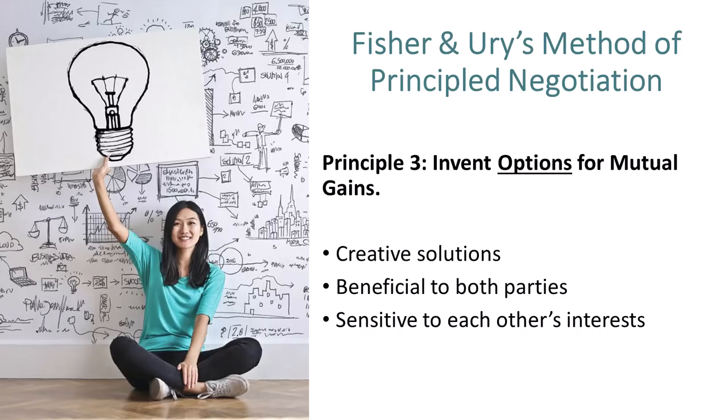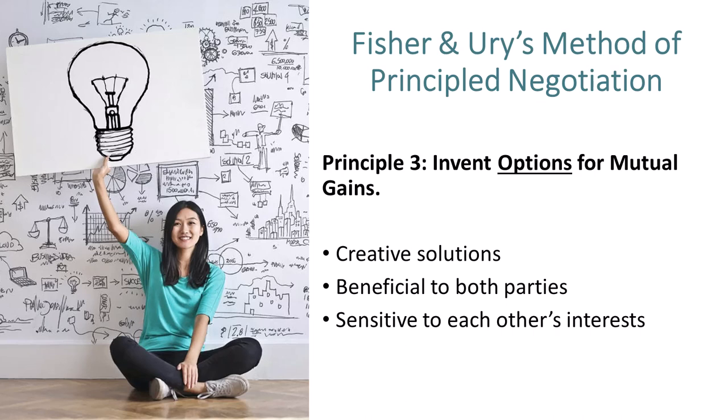Third, invent options for mutual gains. Think of creative solutions that can benefit both parties. When both sides are sensitive to the other party's interests, you can make it easier to find solutions. But note, this step is impossible unless you engage in the first two steps of separating people from the problem and focusing on interests, not positions.